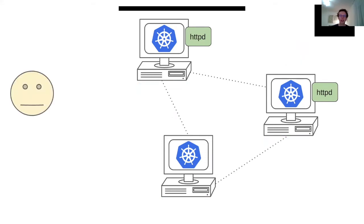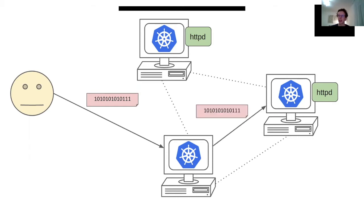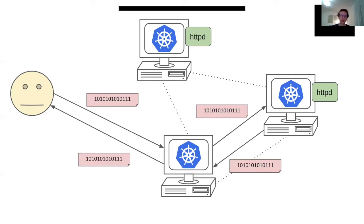When a client sends a request to a service, the node which receives the request has to select the service endpoint. If it's a non-local endpoint, then it has to be redirected to a remote node. The reply from the remote node has to be passed to the intermediate node, and finally it can be redirected back to the client.